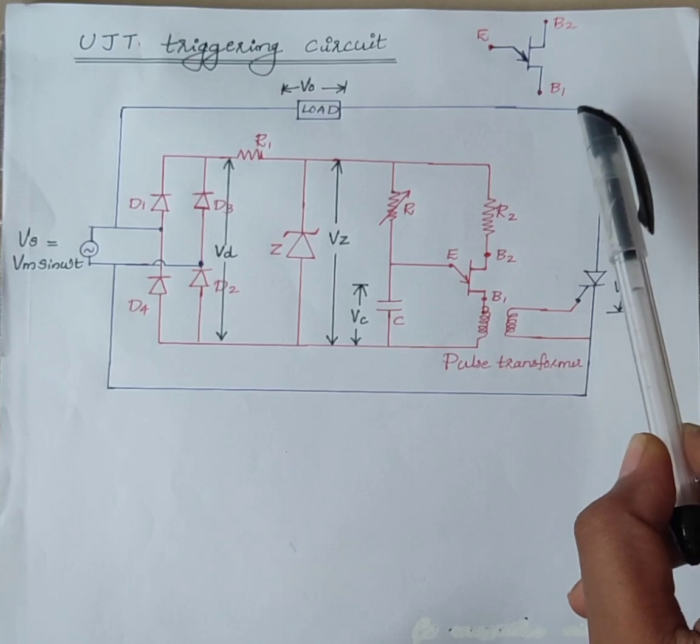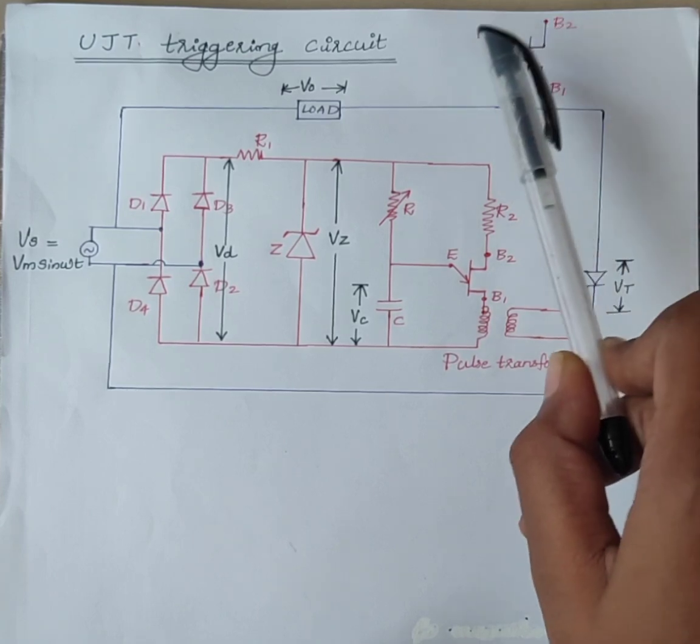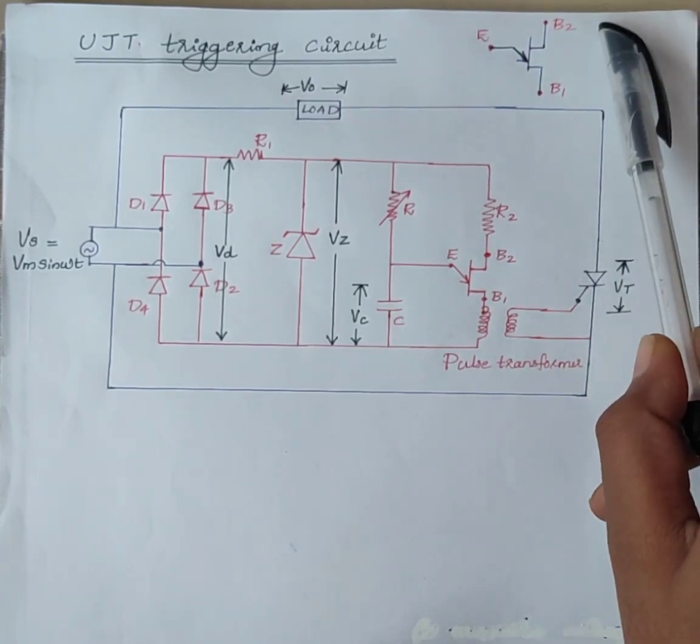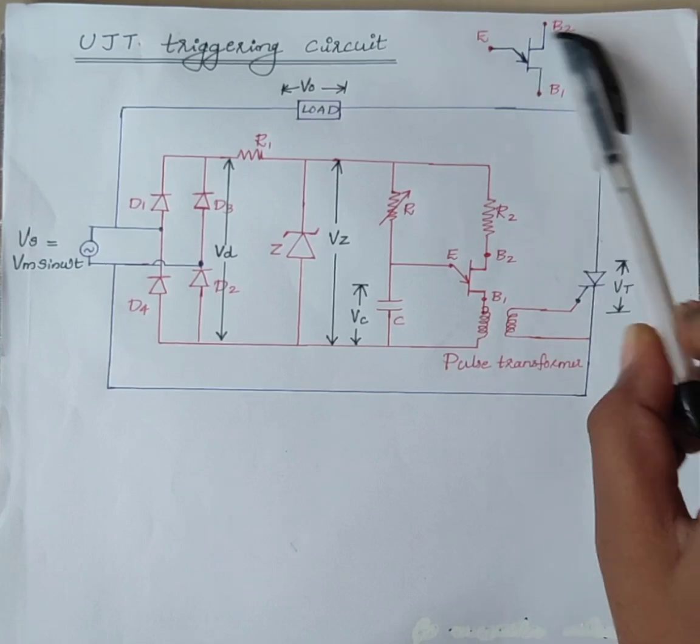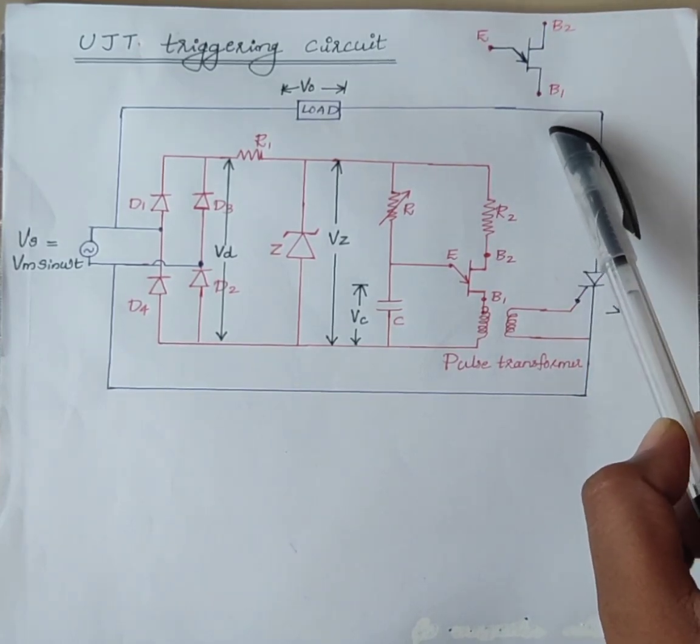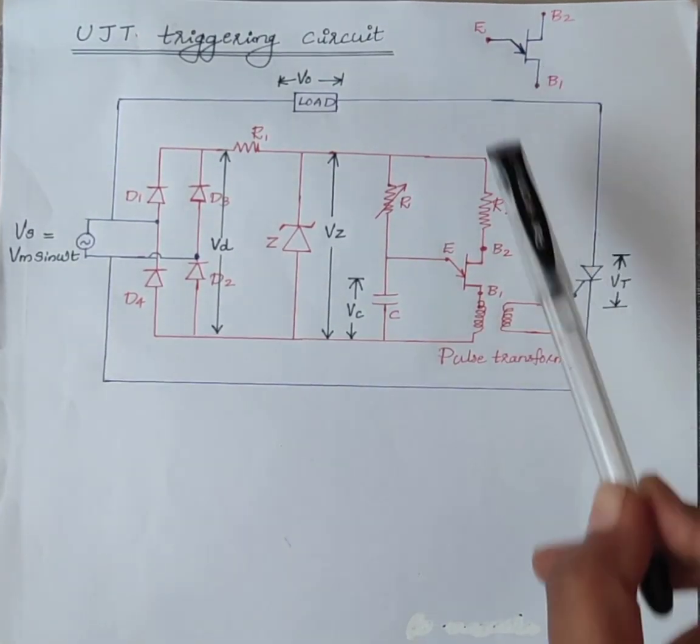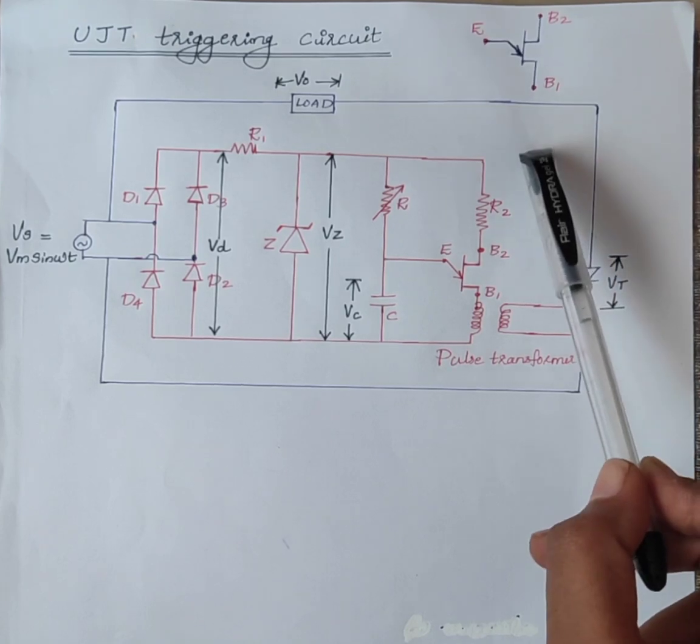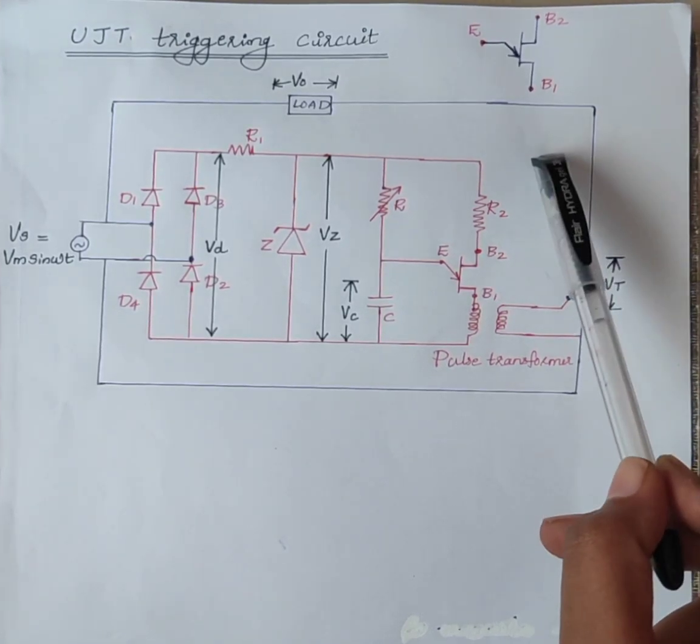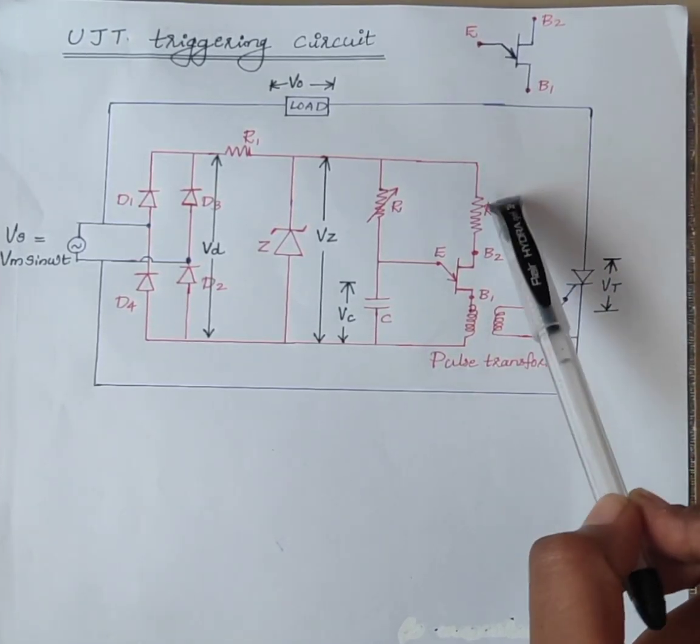The UJT has three terminals: emitter, base 1 and base 2. This is the symbol of UJT. UJT is a highly efficient switch. Its switching time is in the range of nanoseconds.